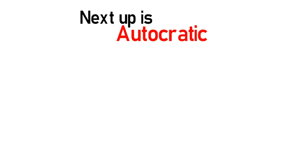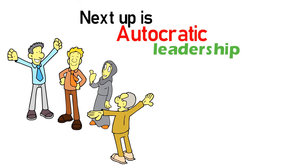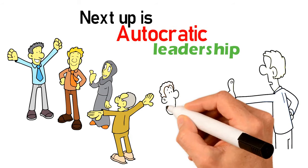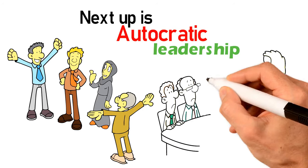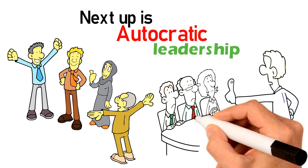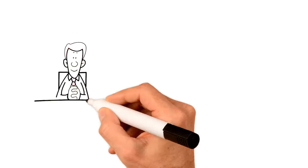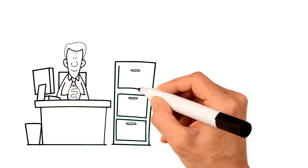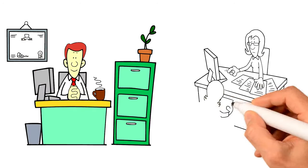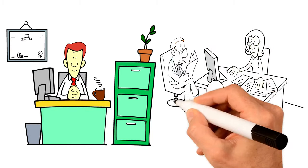Next up is autocratic leadership, also known as authoritarian leadership, which is a leadership style where one person has control over all decisions and where there is little input from group members. Autocratic leaders typically make choices based on their ideas and judgments and rarely accept advice from employees in the organization.